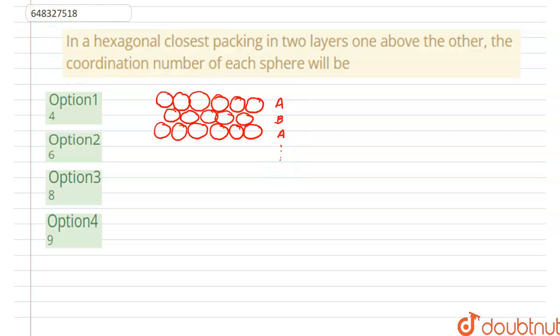So, in hexagonal closest packing, actually what happens, one atom, each atom, just to make you understand.